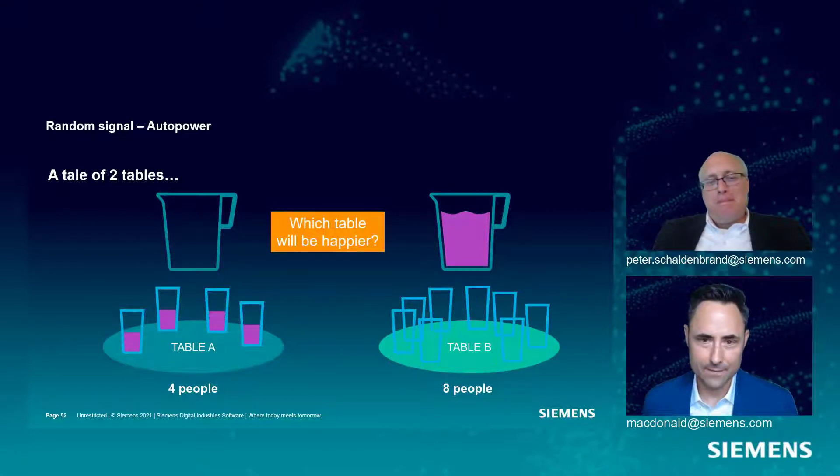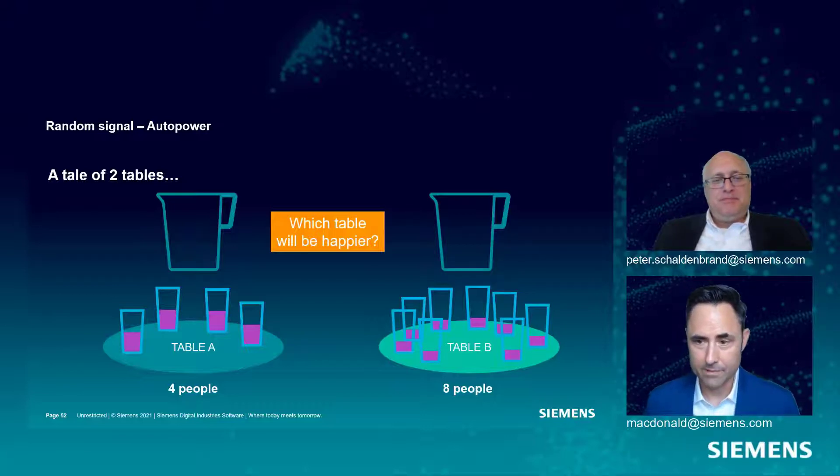That's right. We're going to take that pitcher of energy and divide it among four people versus eight people. Table A is going to be happier because they all paid money for this pitcher of Kool-Aid and they're going to get more than their Table B counterparts.